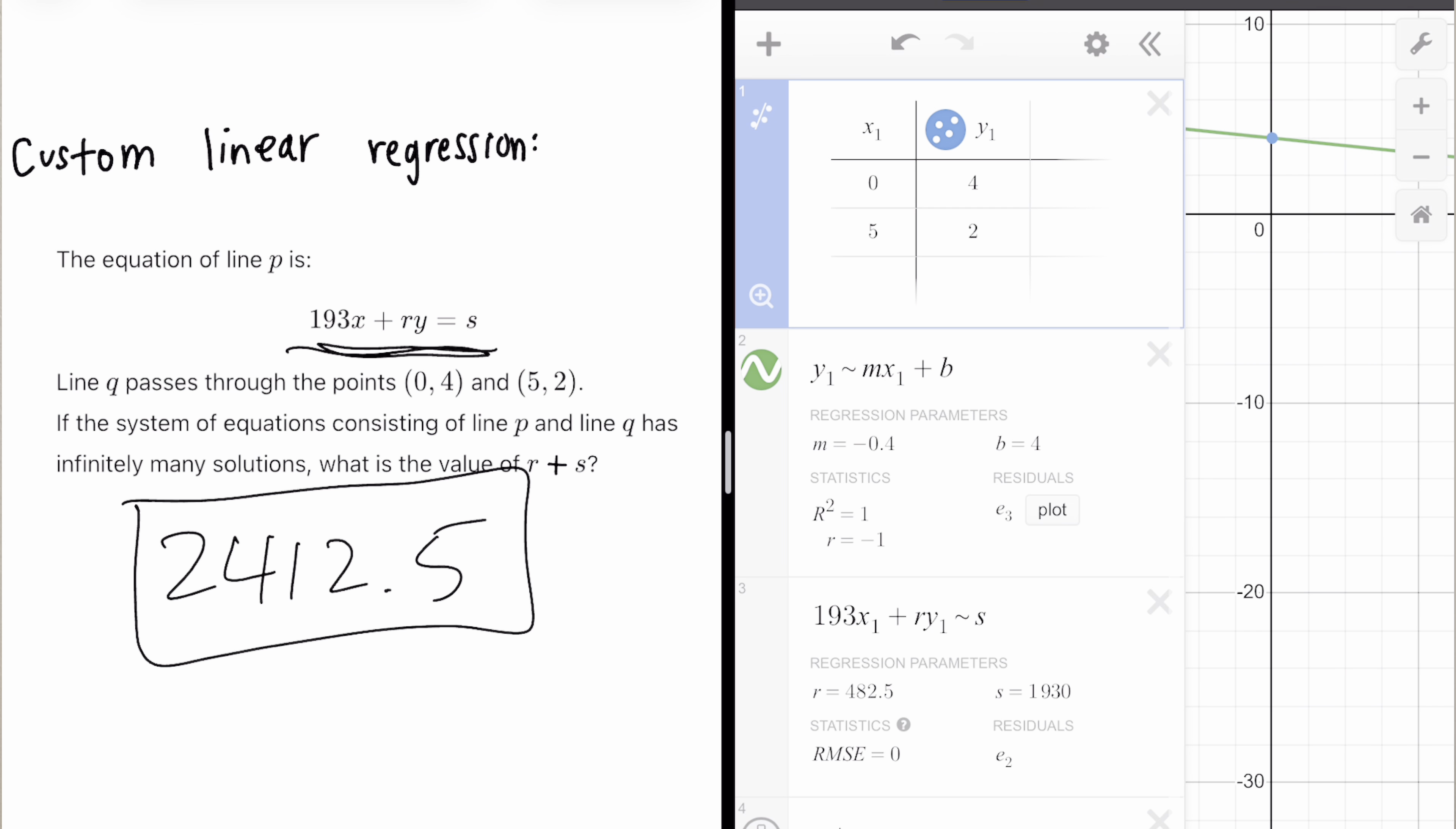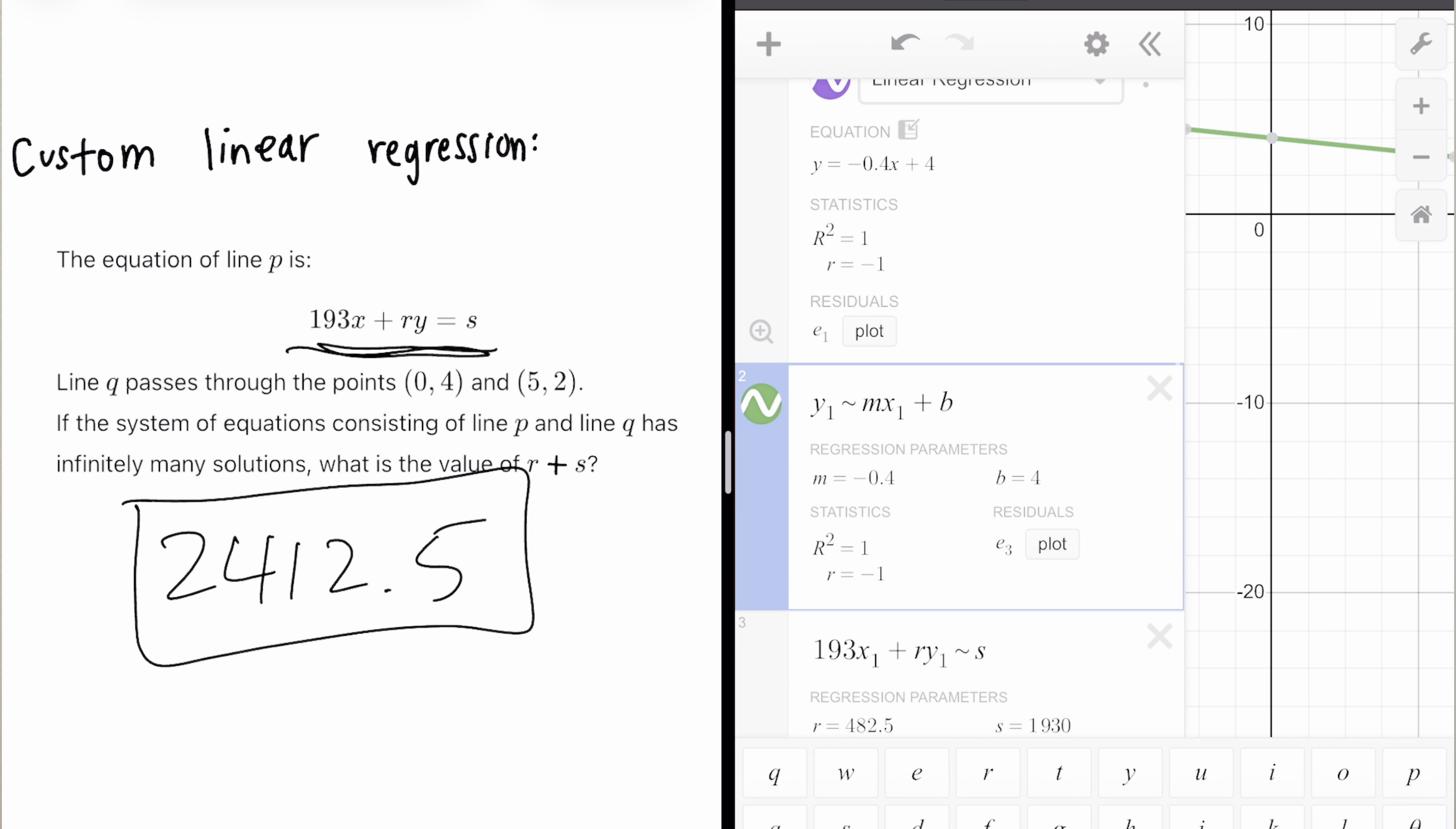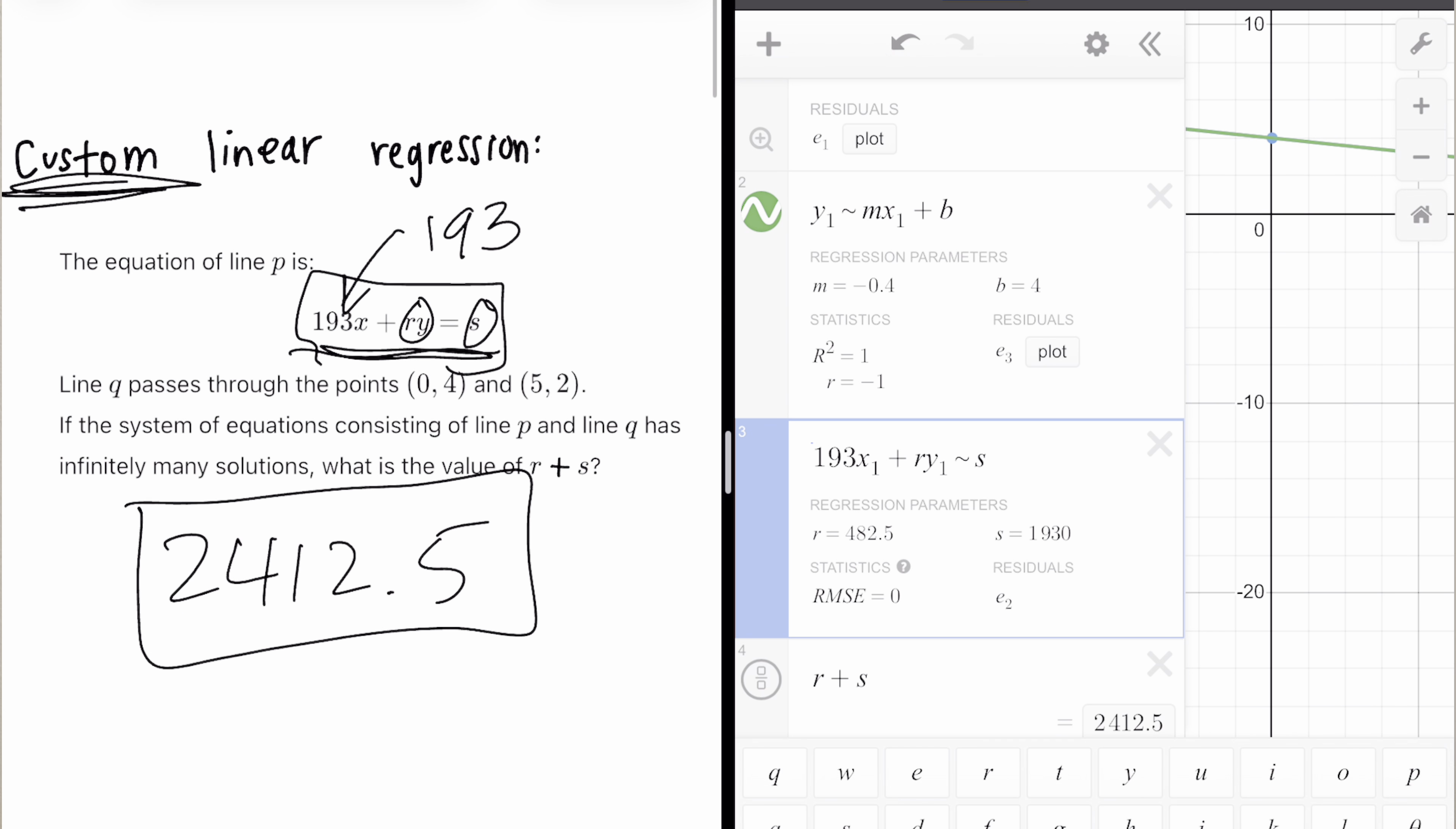Okay. Let's explain what I just did. So when we click this button that says add regression, we get this, but what if we don't want the slope and y-intercept? For example, in this question, what if the coefficient in front of the X is already defined as 193? And we just want to solve for R, Y and S, but we can create our own custom linear regression. That's why this is called custom linear regression and put in X1, Y1 and tilde.